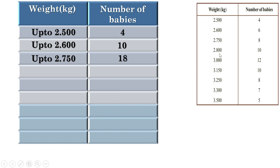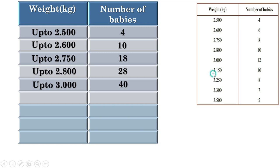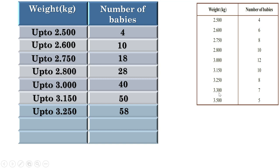Weight up to 2.8 kilograms: there are 18 plus 10, or 28 babies. Weight up to 3.15 kilograms: there are 40 plus 10, or 50 babies. Weight up to 3.25 kilograms: there are 50 plus 8, or 58 babies. Weight up to 3.5 kilograms: there are 65 plus 5, or 70 babies.